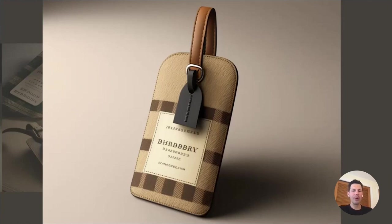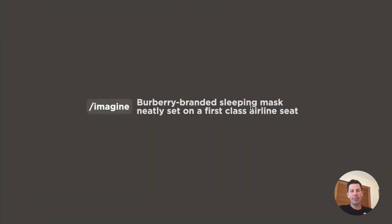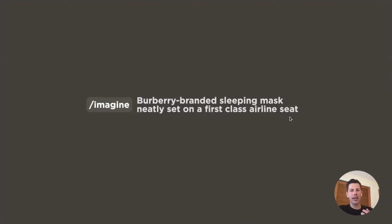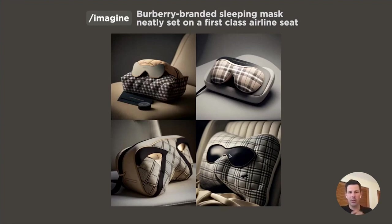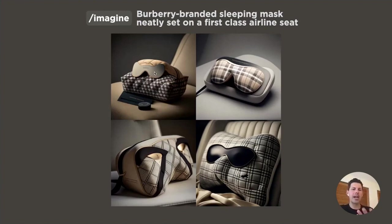The next one: 'Burberry branded sleeping mask neatly set on a first class airline seat.' Again I omitted 'British Airways' because I was trying to revolutionize what their first class looked like. What came back had a lot of problems — one looked too cheap, one looks like the pillow is a person's face, another looks cartoony, and one looks like sunglasses. I liked the coloration and direction, but with a team of designers I wouldn't receive these kinds of mistakes.